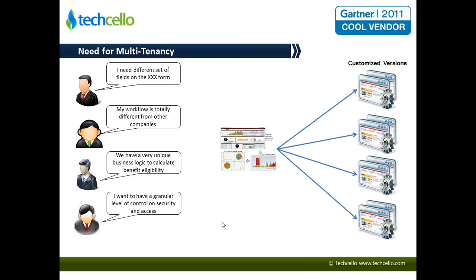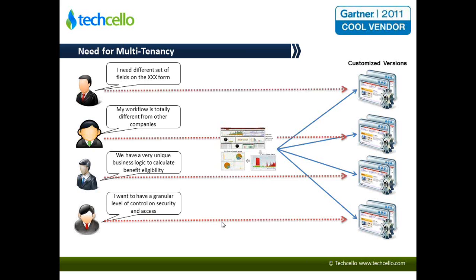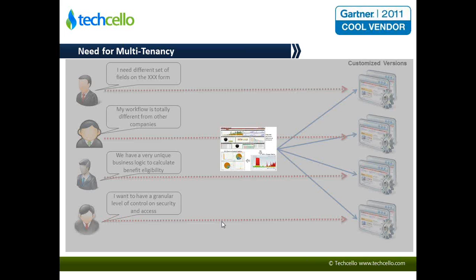So what do you end up doing? You create customized versions of the product — you take the product, understand that particular customer's need, take a copy, implement the specific fields, business logic, and workflow unique to that customer, and then maintain these customized versions. With four customers it's manageable, but as you keep adding customers, it becomes extremely difficult and costly to maintain all these different versions.